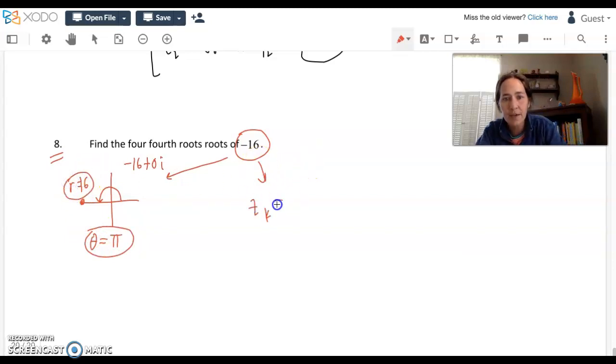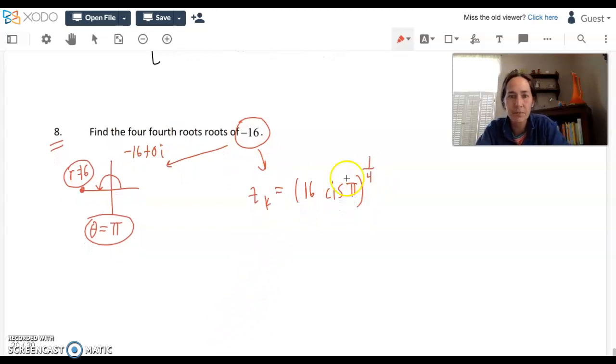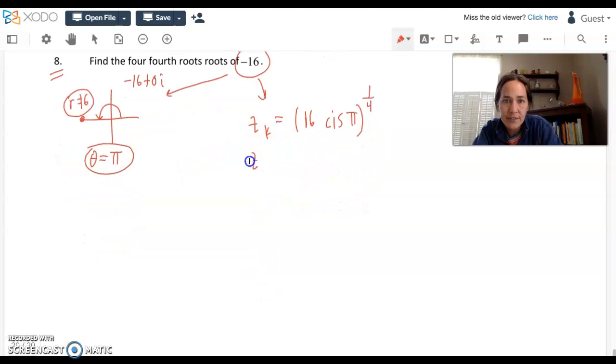So we want z sub k to equal, let's write this as r cis θ, 16 cosine plus i sine π. And we want the four fourth roots, so we'll raise that to the one fourth power. Work your magic. Take the 16, simply raise it to the one fourth, you get the number two, the fourth root of 16, the real fourth root of 16. And then you've got cosine plus i sine. The one fourth times π for starters, that'll get us one answer, but to get all the answers, let's add 2kπ to that. And we'll bring the one fourth in to help with simplifying. 2 cosine plus i sine π over 4 plus kπ over 2.